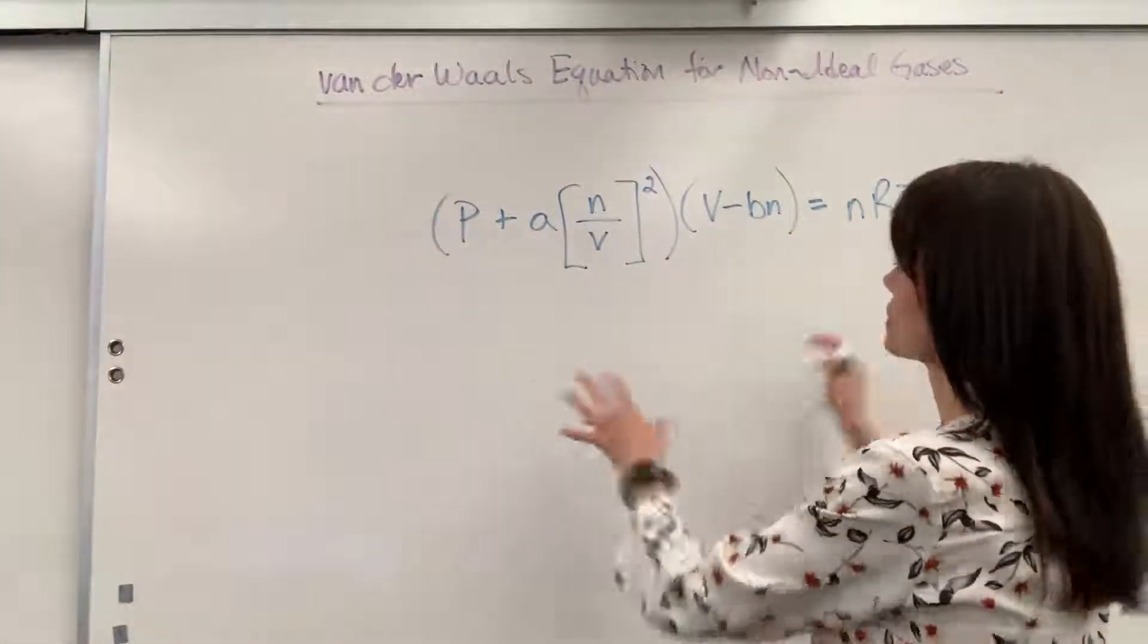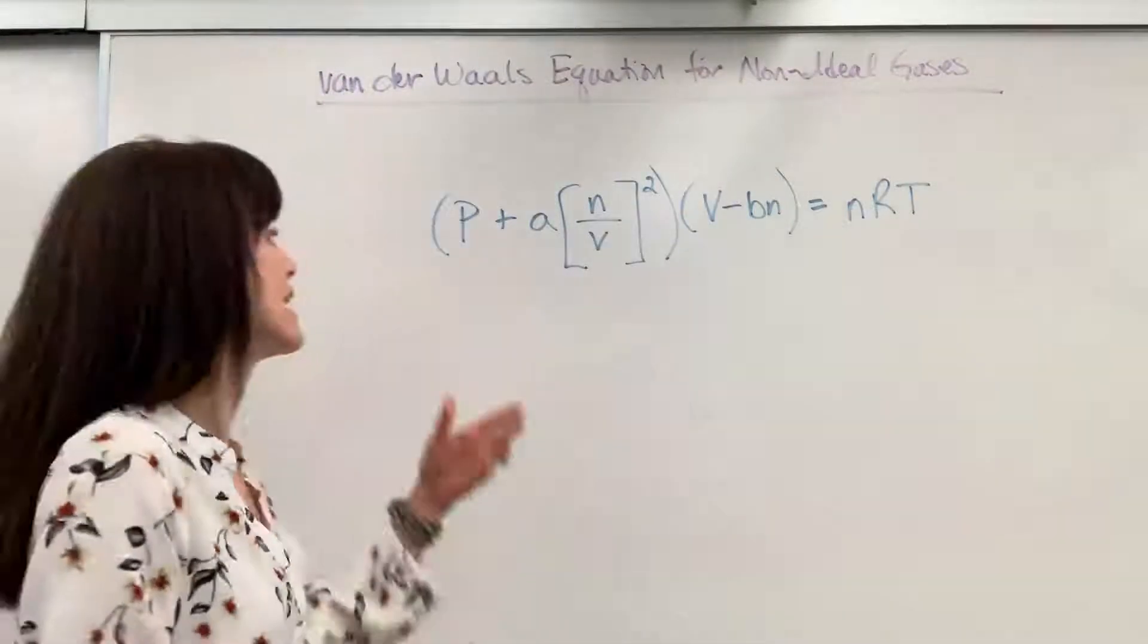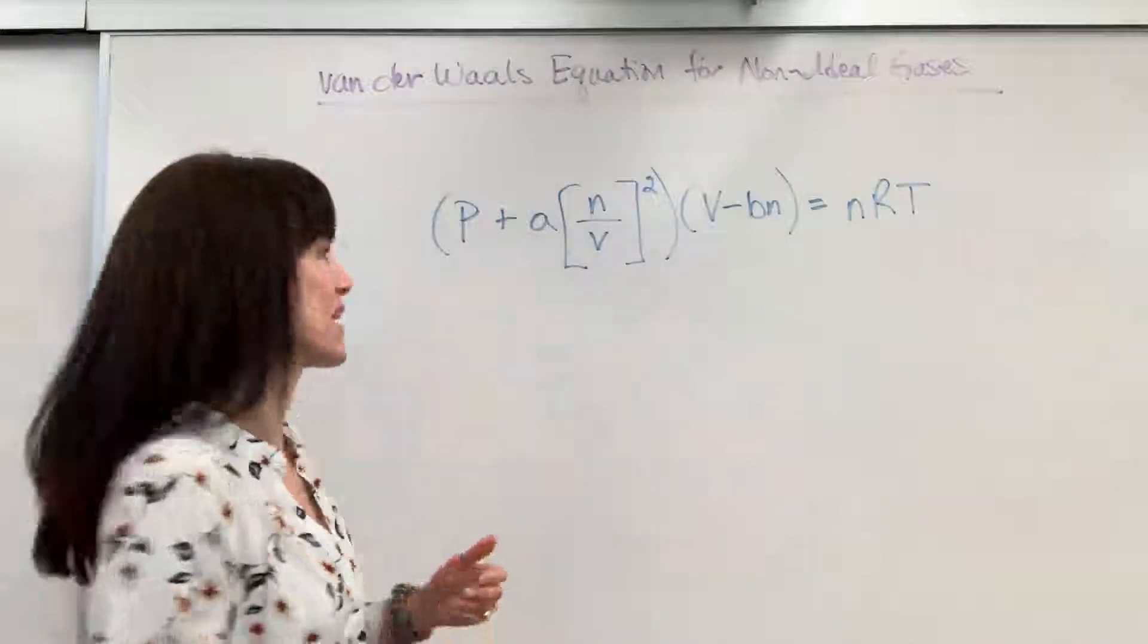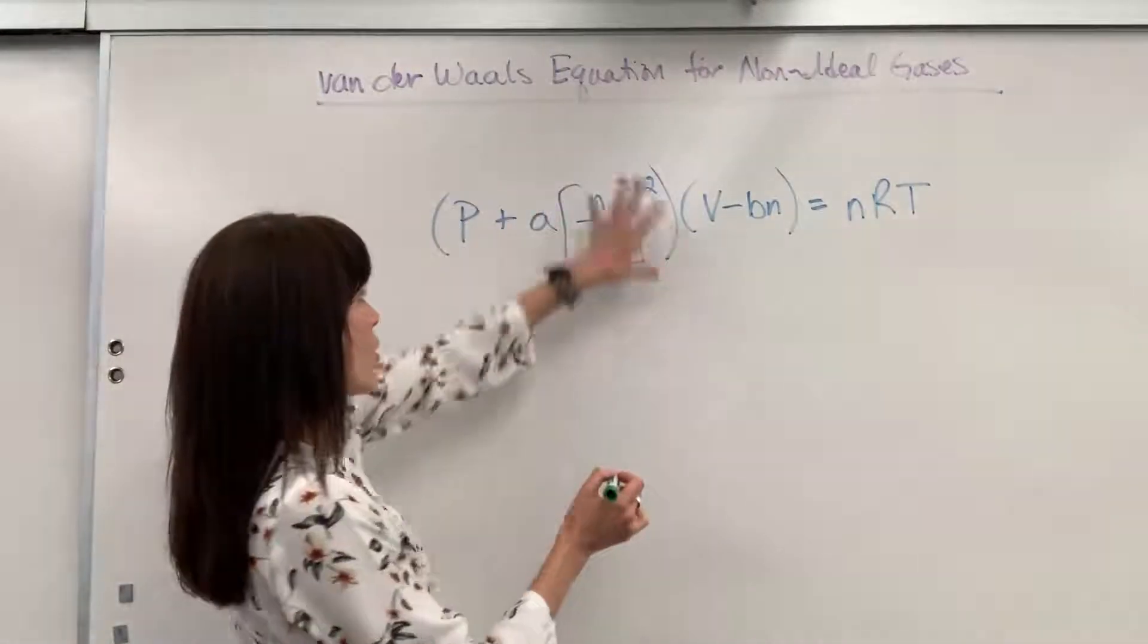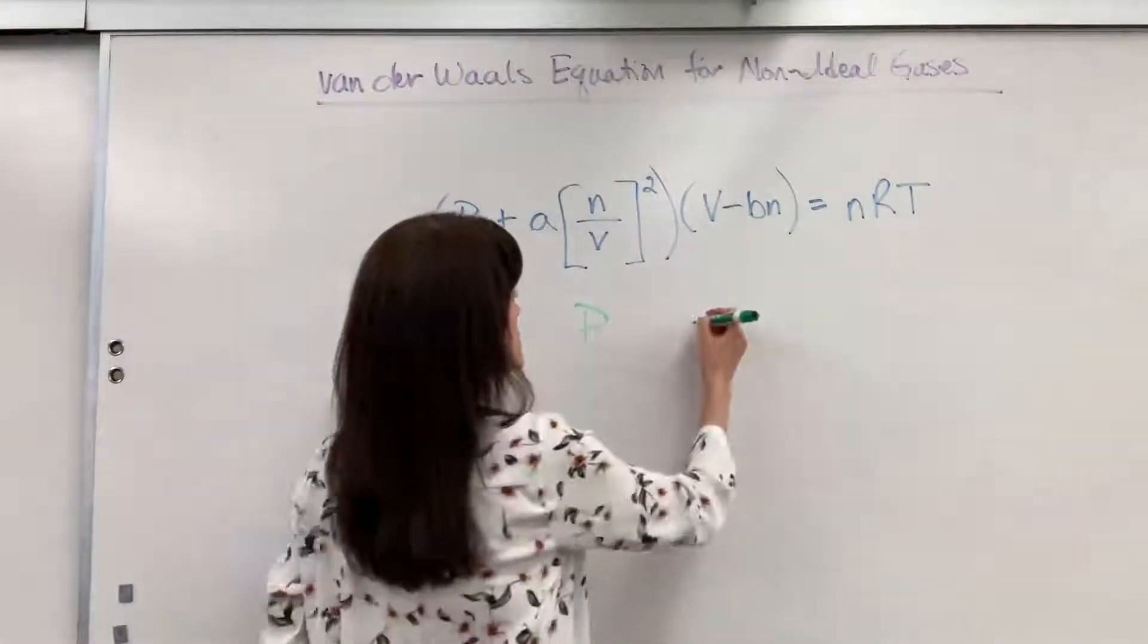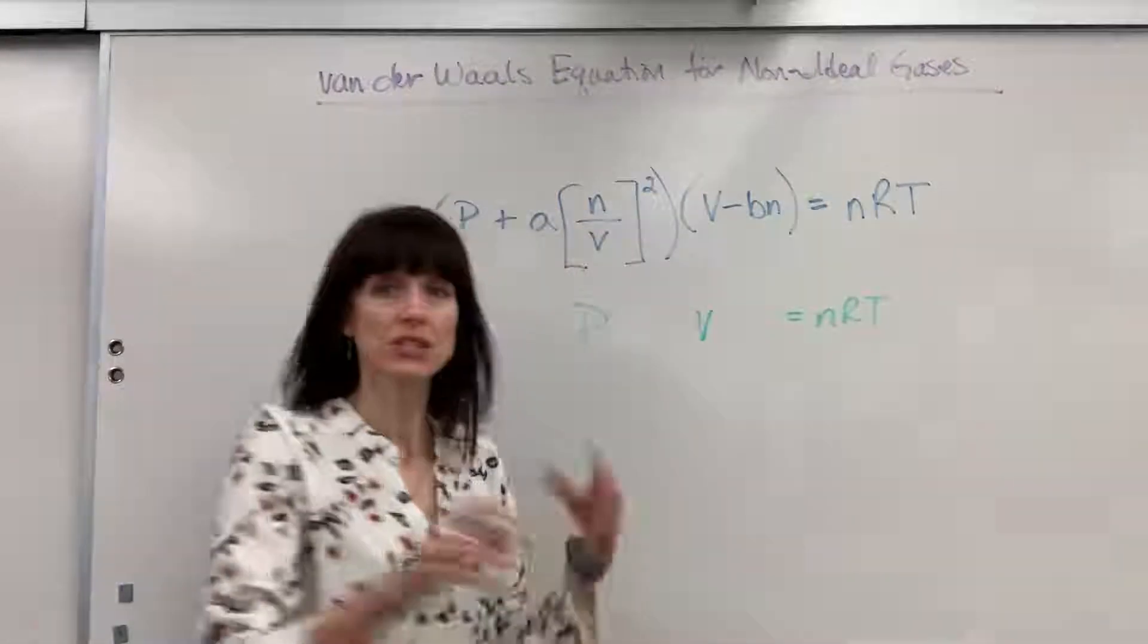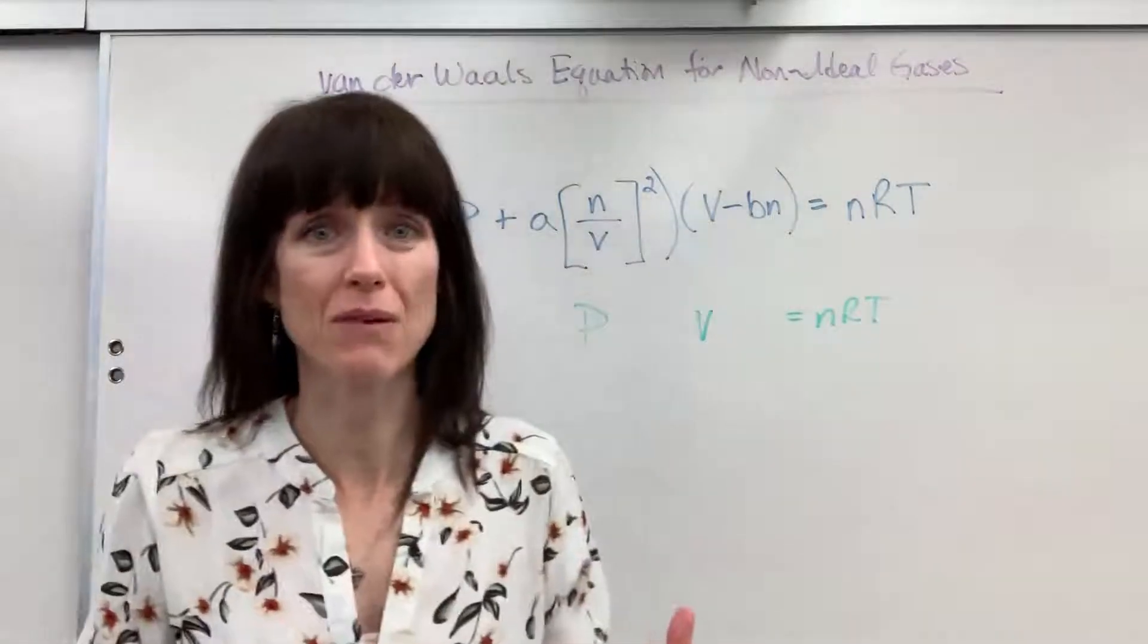Now first, I want to pull out for you the similarity with the ideal gas law and Van der Waals equation for non-ideal gas behavior. Notice this whole set of terms is your P. This whole set of terms is V. And then that equals nRT. So it's just PV=nRT, just remade.